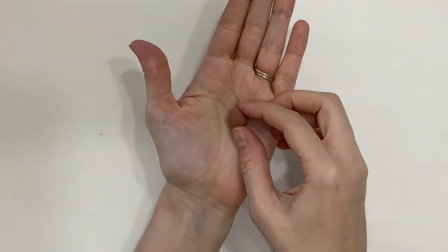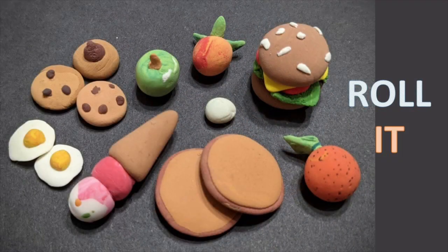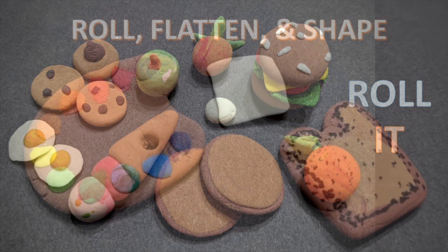Or you can gently flatten it against the table and you'll get a flat circle. This is great for things like pancakes or hamburger buns. It also just makes it nice and even and you can turn that circle into other shapes.